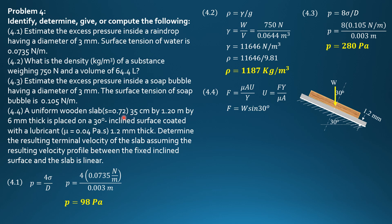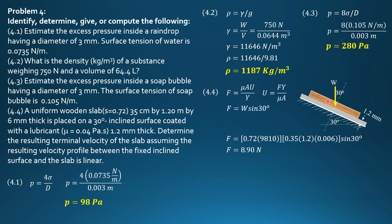Where F is W sine of 30 degrees, and W is specific gravity of wood times 9,810 N per cubic meter, to convert weight in Newtons. Then volume equals 0.35 meter times 1.2 meter times 0.006 meter, then times sine of 30. So, 0.72 times 9810 times 0.35 times 1.2 times 0.006 times sine of 30 degrees. So, the shear force — the component of weight along the inclined plane — is 8.90 N.